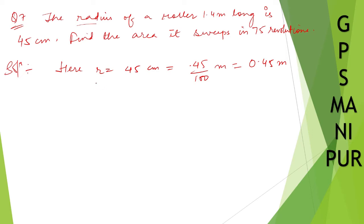I'm converting it into meters because the answer is in meters, and another term is also given. This is height, so h equals 1.4 meters. Therefore, we need to find curved surface area first. Curved surface area of the roller equals - the formula is 2 pi r h.